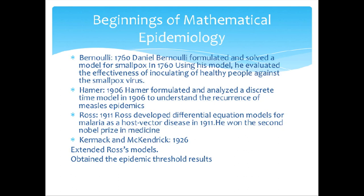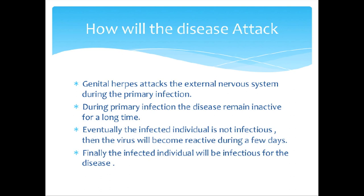How will the disease attack? Genital herpes attacks the external nervous system during the primary infection. During the primary infection, the disease remains inactive for a long time. Eventually, the infected individual is not infectious. Then the virus will become reactive during a few days, and finally the infected individual will be infectious for the disease.